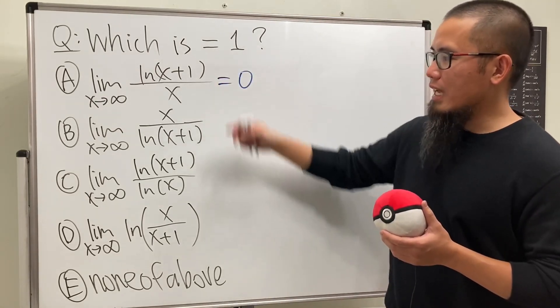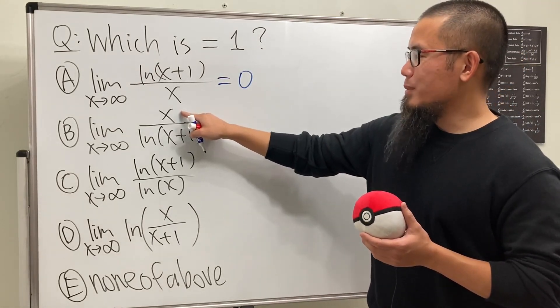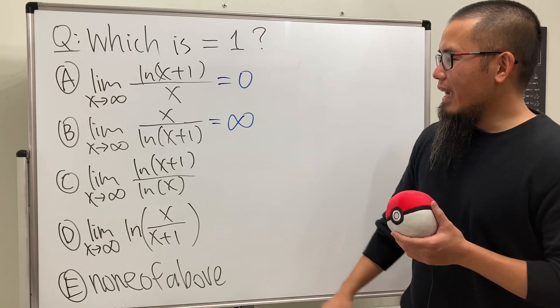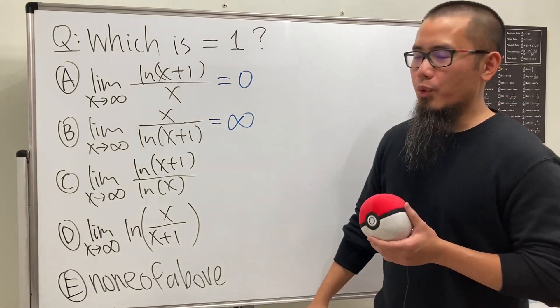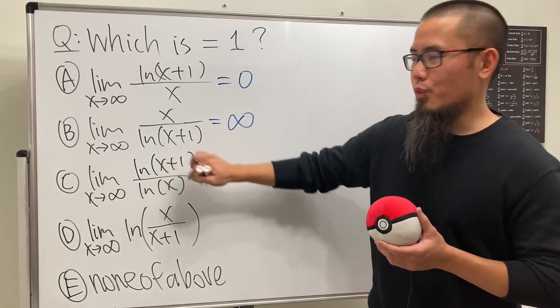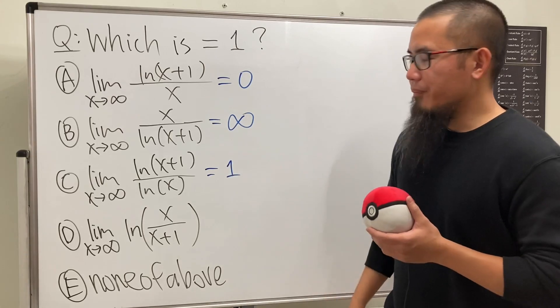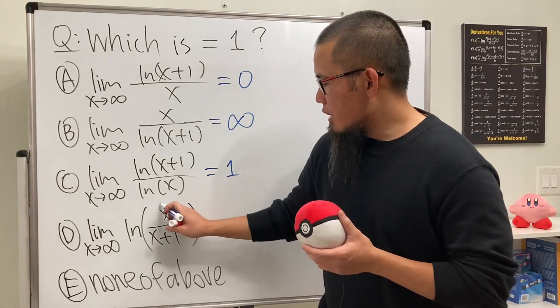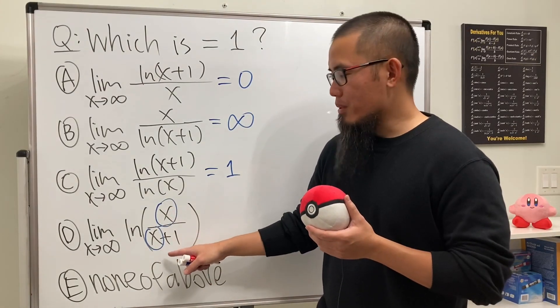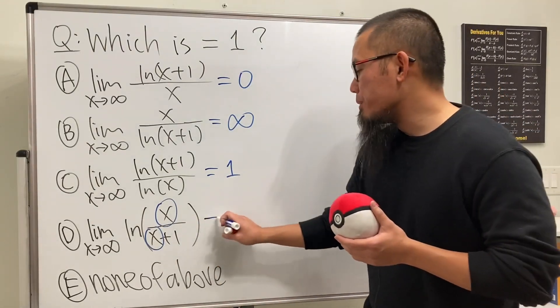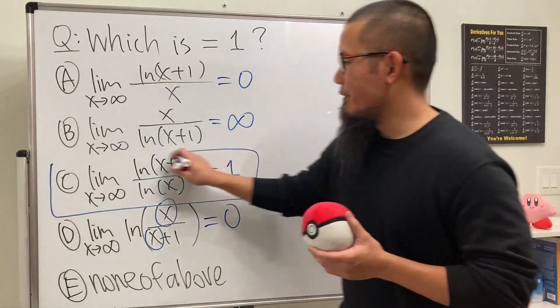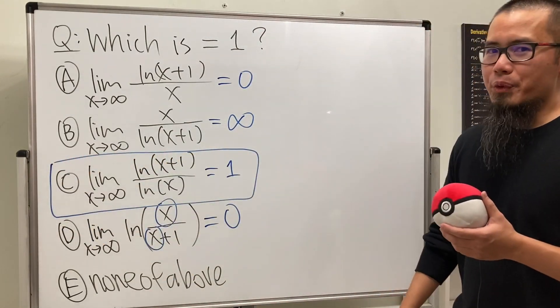And then for C, if you do L'Hôpital's rule, or maybe you can just ignore the one, you see ln(x) over ln(x) is just equal to one, so C is the answer. And then for D, in fact you compare this and that - you ignore the one, and that's just going to be one inside. But remember that's inside the natural log, so in fact this will be zero. So the answer for this question is C. Yeah, nice and quick.